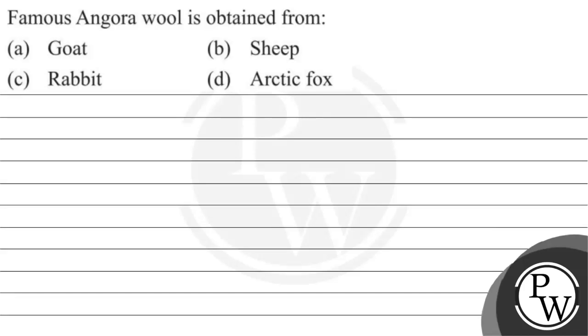Hello guys, let's read the question. The question says: famous Angora wool is obtained from — option A: goat, option B: sheep, option C: rabbit, option D: arctic fox.